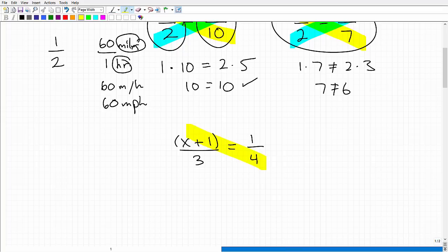With this being said, we're going to go ahead and use the cross product to help set this up for us. We're going to go 4 times (x+1), so that'll look like this, is equal to 3 times 1, or 3.